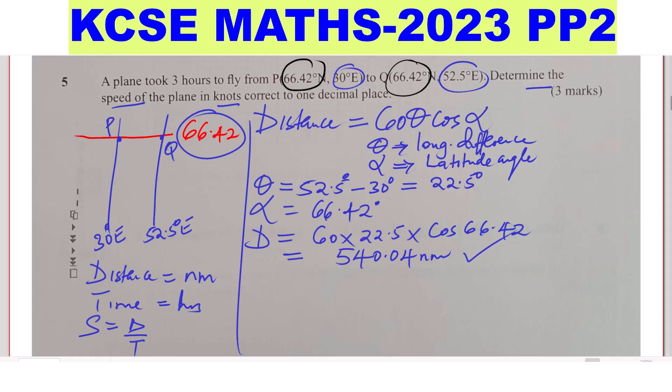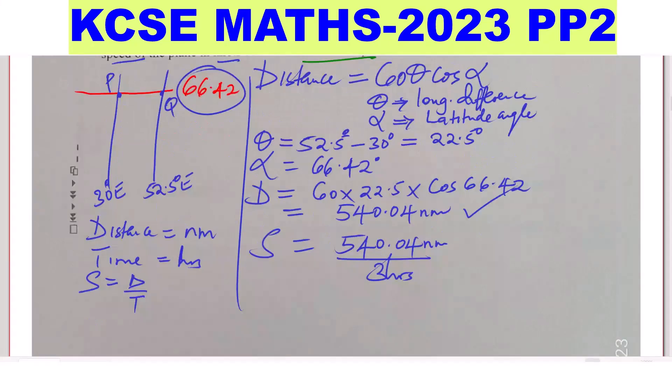That is the distance. Now let's go to the speed. Speed is given by, in knots, you get distance in nautical miles, which is 540.04 nautical miles. Then you're given 3 hours. Plane took 3 hours, time is 3 hours. When you divide this, this will give 180.01333. In regard to give your answer correct to one decimal place, we'll give it as 180.0 knots.